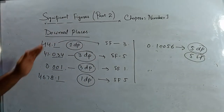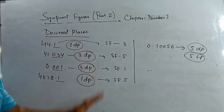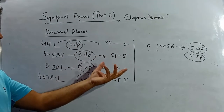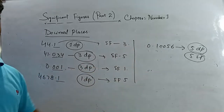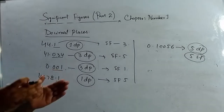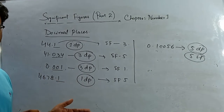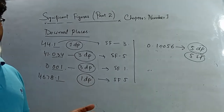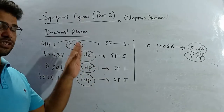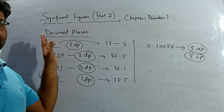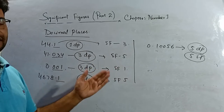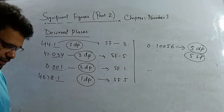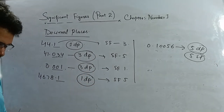Now you can understand: decimal places are counted after the decimal point. Whereas significant figures follow specific rules — non-zeros and the particular rules I discussed in part one of significant figures. You can see those rules and will understand it very easily.